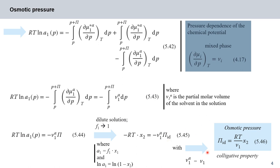Since we are dealing with an ideally dilute solution, the partial molar volume V₁^alpha of the solvent equals the molar volume V₁ of the pure solvent. Restating equation 545 as equation 546, the osmotic pressure of an ideally dilute solution equals RT over V₁ (the molar volume of the pure solvent) times x₂. From this equation we see that the osmotic pressure of an ideally dilute solution is proportional to the mole fraction of the solute x₂ and is independent of its chemical nature — just like the depression of vapor pressure, the elevation of boiling point, and the depression of melting point. Osmotic pressure therefore belongs to the colligative properties.